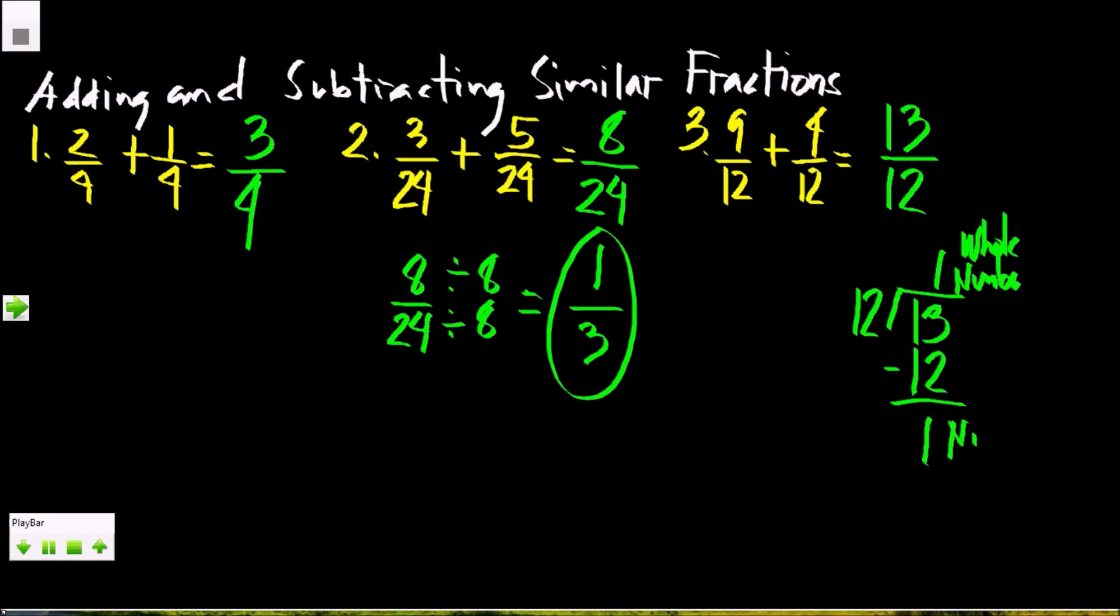The quotient will be the whole number, and the remainder will serve as the numerator, and the divisor will be our denominator. If we are going to write this into a mixed number, it is equal to 1 and 1/12. 1 is the whole number, 1 is the numerator, and 12 will be the denominator.